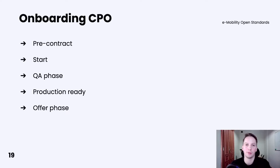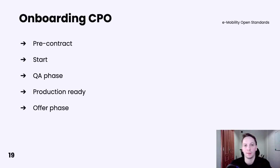Here you will also define your operator ID, generate CSR, and whitelist your server IP. Then we have the onboarding start phase. It's basically a continuation of the pre-contract phase, but here you will receive RFID cards from Hubject for test purposes. The QA phase is all about implementation of services, configuration, and testing integration.